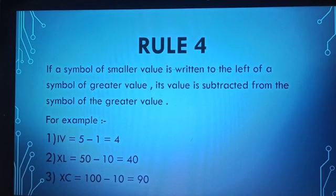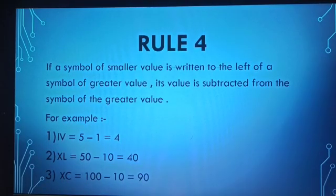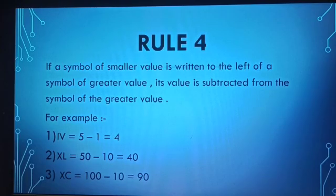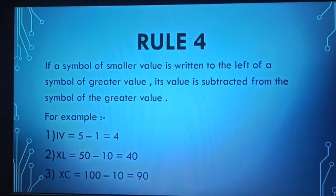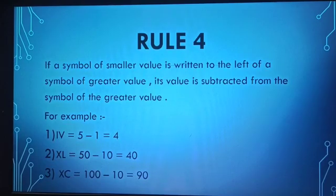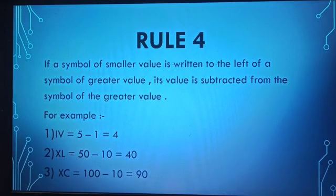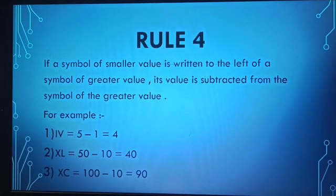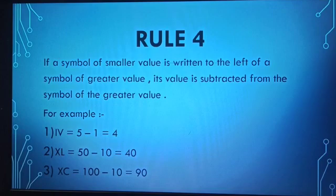Rule 4: if a symbol of smaller value is written to the left of a symbol of greater value, its value is subtracted from the value of the greater symbol. For example, I is 1 and V is 5, so IV equals 5 minus 1, which is 4. In the second example, X is 10 and L is 50, so XL equals 50 minus 10, which is 40. In the third example, X is 10 and C is 100, so XC equals 100 minus 10, which is 90.